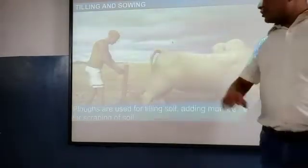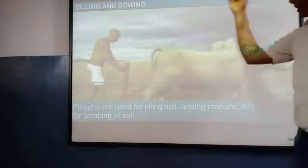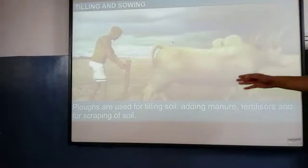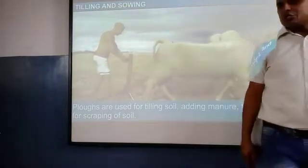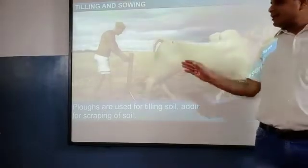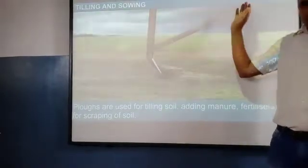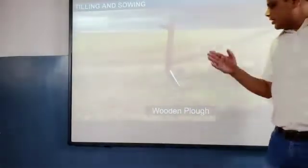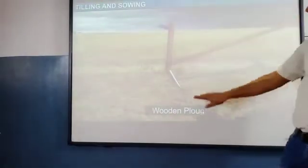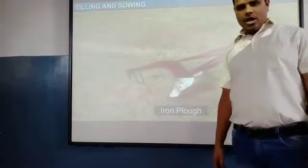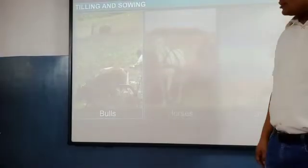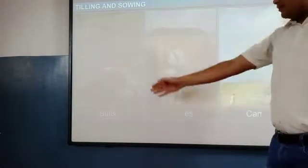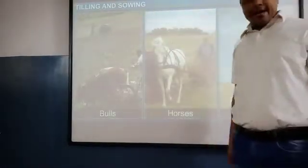What are the uses of a plow? A plow is used for tilling of soil, adding manure and fertilizer, and for scraping the soil. You can see how plowing is done. If you have visited a village you might have seen a plow. This is a picture of a wooden plow — we also have iron plows. Tilling can be done with the help of bulls, horses, or camels.